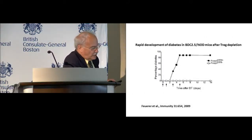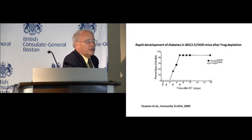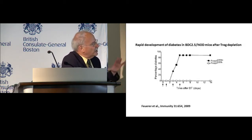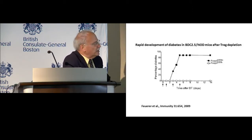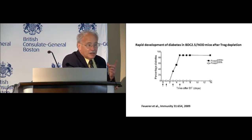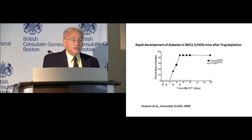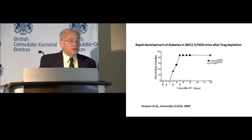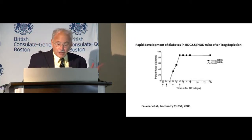A slight extension of this from the Mathis-Benoist laboratory: they took a transgenic mouse that develops autoimmune diabetes, BDC 2.5, on an NOD background. They also had a FOXP3-DTR mouse where they could administer diphtheria toxin to kill off regulatory cells. In two days, every single animal developed type 1 diabetes. So these regulatory cells are controlling immune homeostasis in general and specific immune homeostasis in this model of autoimmune diabetes.